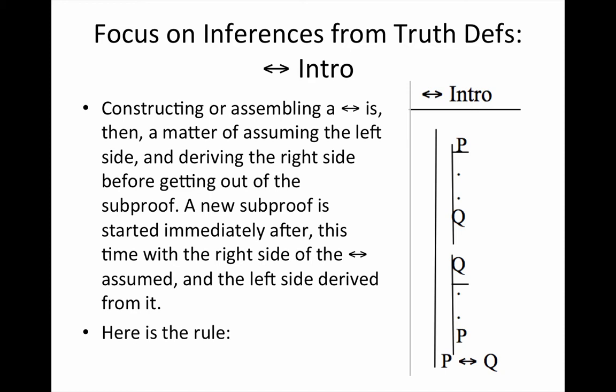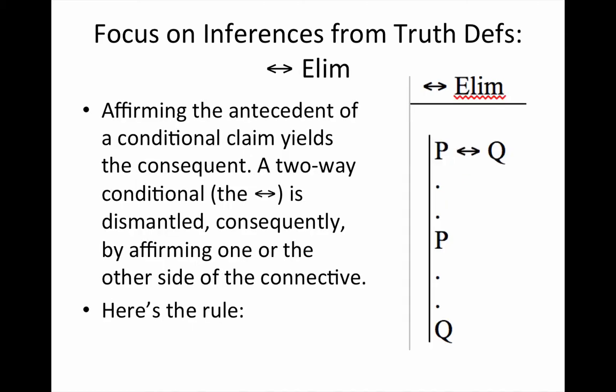you can think about the biconditional intro rule as working the conditional intro twice. You can think about it as looking somewhat like the disjunction elimination rule insofar as the biconditional intro rule involves a successive sub-proof sequence, two sub-proofs on the same line. That is, they are not indented one within the other. They're both indented on the same tab, if you will.